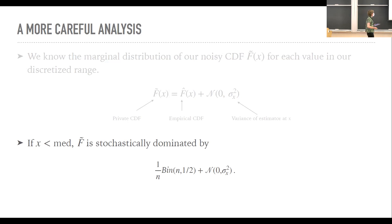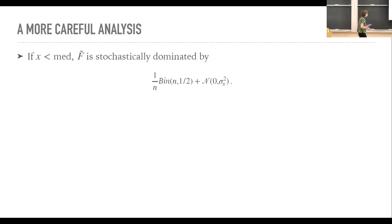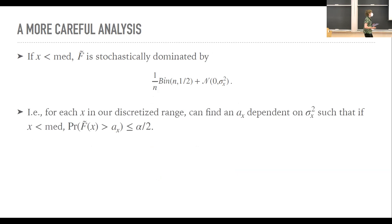And we also know that if for some X that's less than the median, our noisy CDF is going to be stochastically dominated by this binomial plus this noise term. So what this means is that for every value in our discretized range, we can find some A sub X, which is dependent only on this variance term of the count such that if X is truly less than the median, then the probability that our noisy CDF is greater than A sub X is less than or equal to alpha over two.